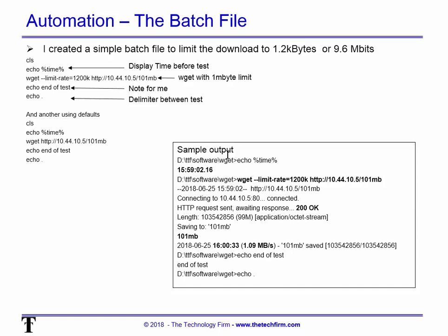This is what the output looks like — you can see the timestamp at the beginning of the test. WGET will also put a timestamp at the end of the test, so you can measure how long it took. I'm going to concentrate on the average throughput right now — this is 1.09 megabytes. The response is 200 OK, which is good to know.